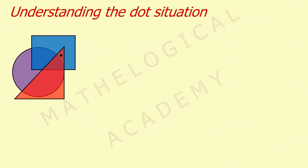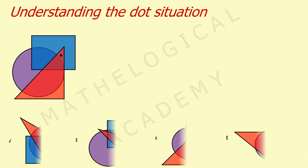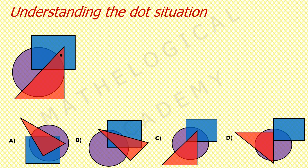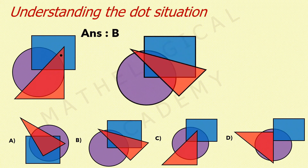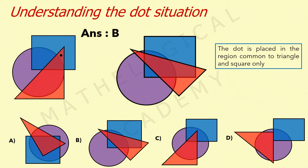Figure. Options. We have to select an option having the same dot situation as the figure given. Our answer here is B, because the dot is placed in the region common to triangle and square only.